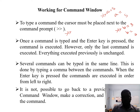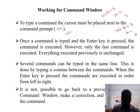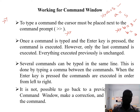Several commands can be typed on the same line. This is done by typing a comma between the commands. Suppose you want to use more variables in a single line — each one can be separated by a comma. For example, you can write: a = 5, b = 3 on the same line.